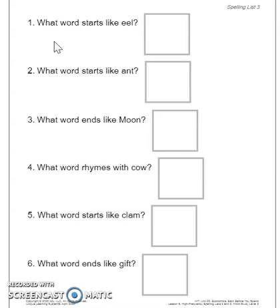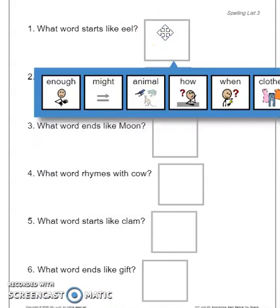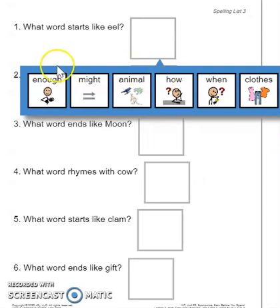All right, so you guys are going to answer questions about our high-frequency word wall words. Here's question number one: What word starts like eel? Let's look at our choices — we have: enough, might, animal, how, when, and close.